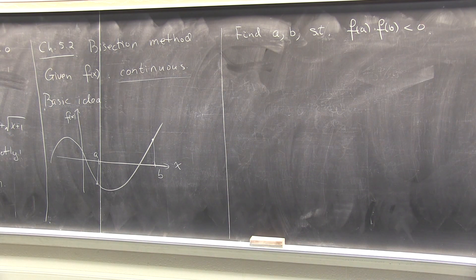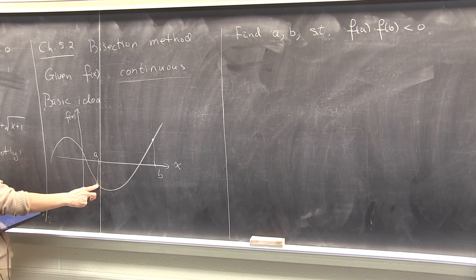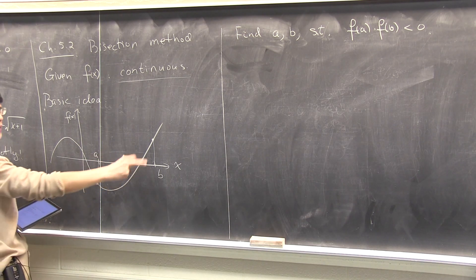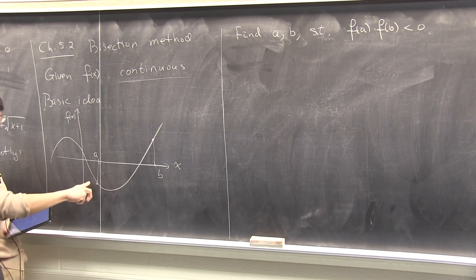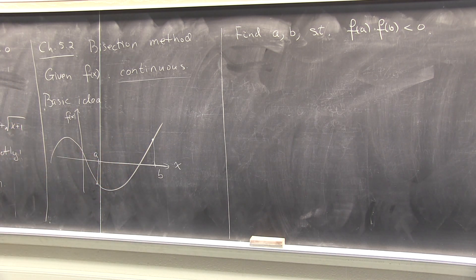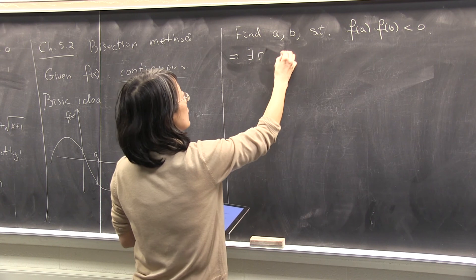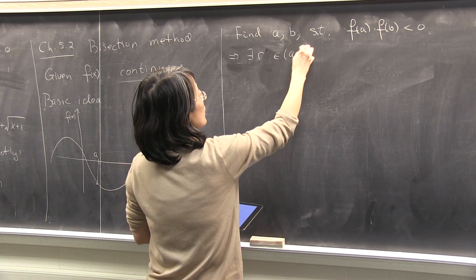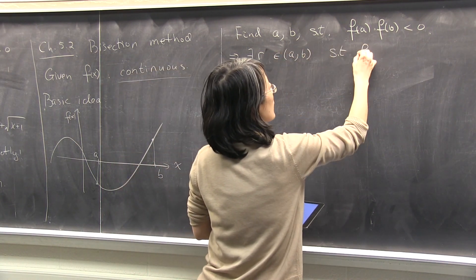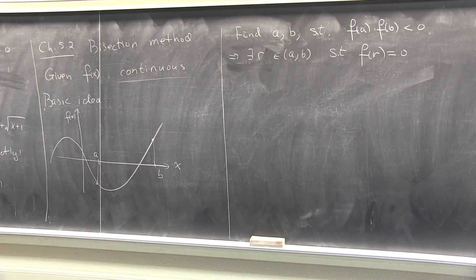Then you can apply that theorem, is that right? Do we all see? You can see from the graph, if on one side, at a and b the graphs are on the opposite side, it has to be connected, it has to cross the x-axis, and that's where the zero is. So you can conclude there exists a r on the interval from a to b such that f of r equals to zero.